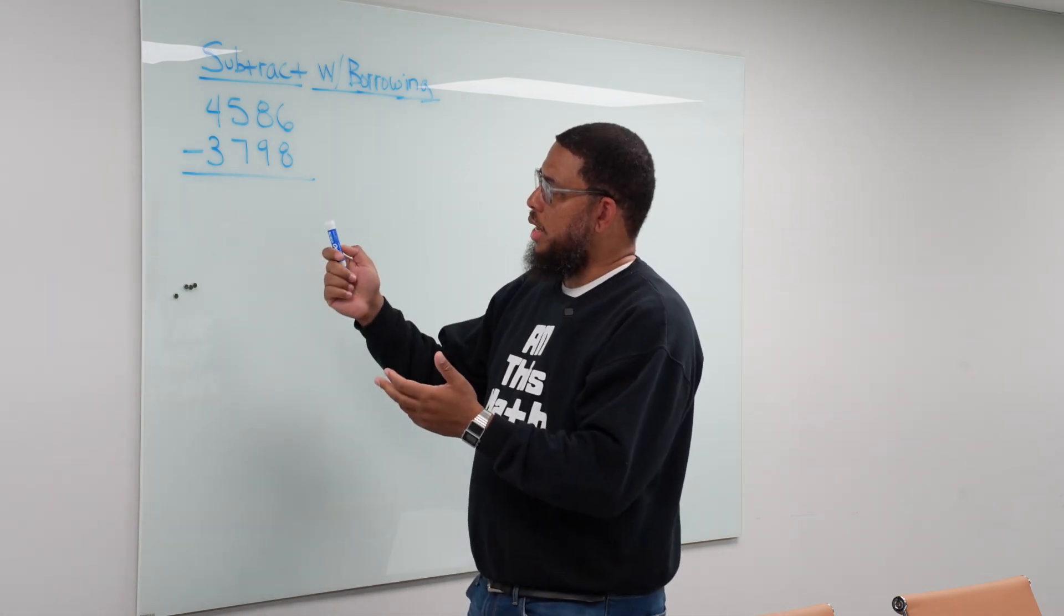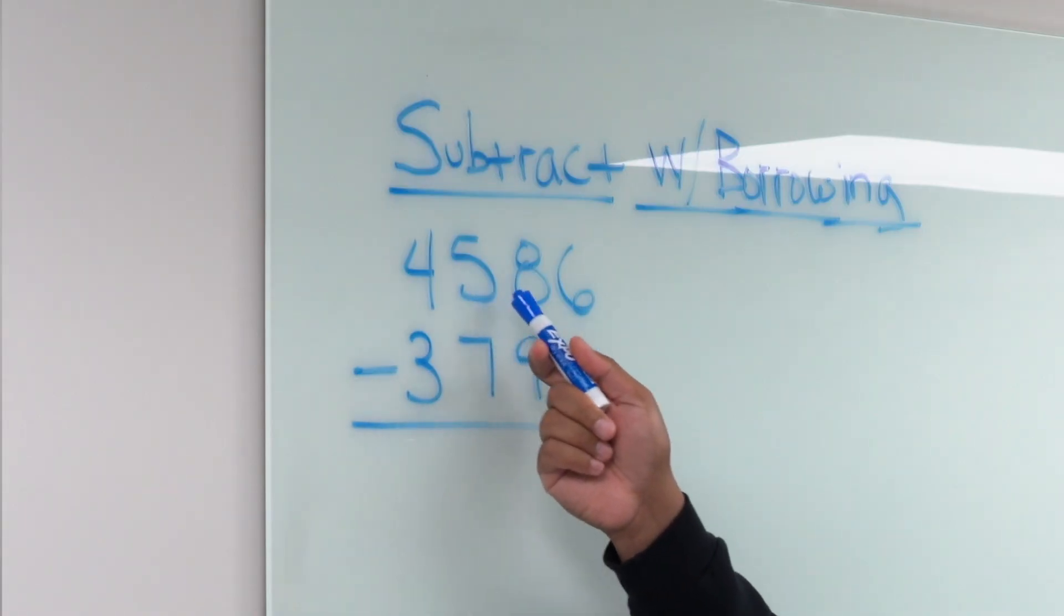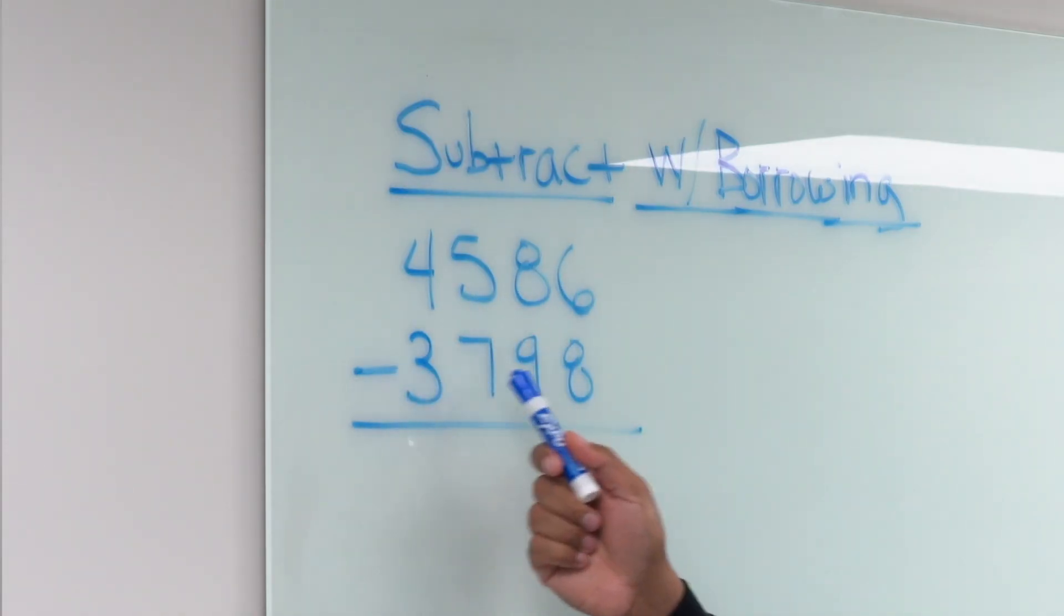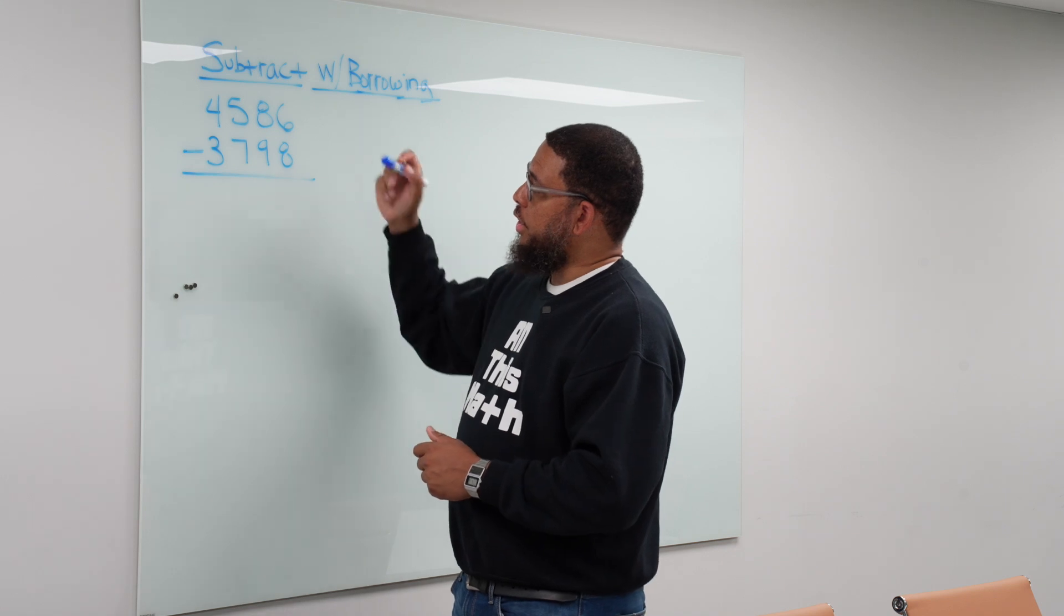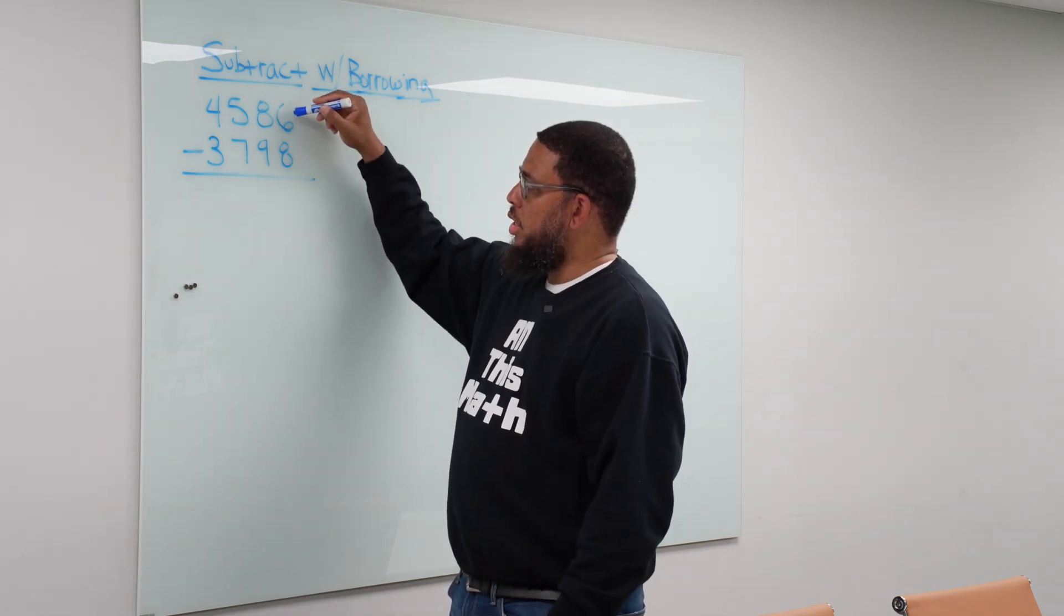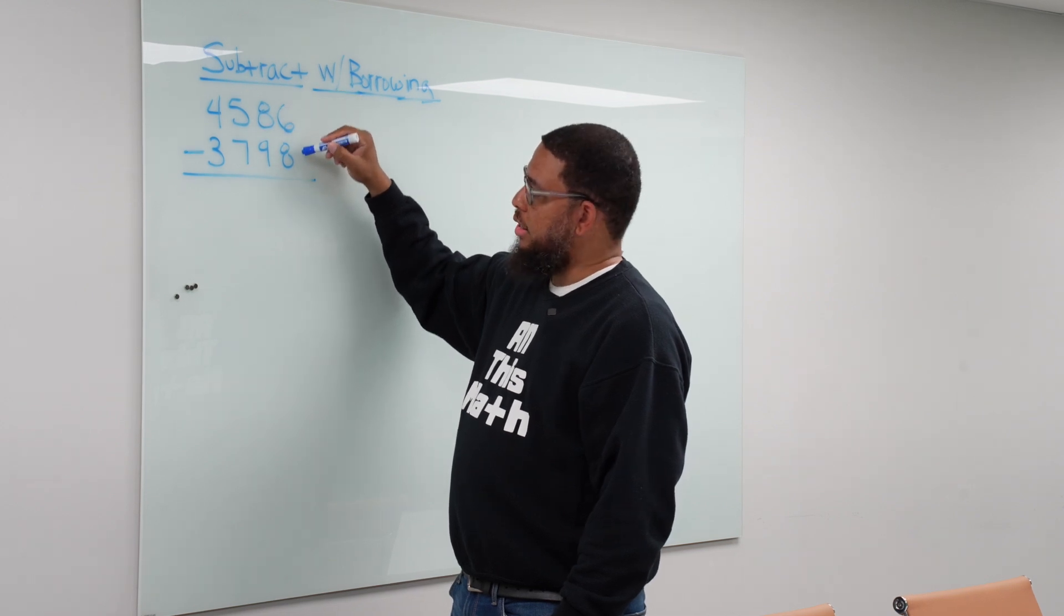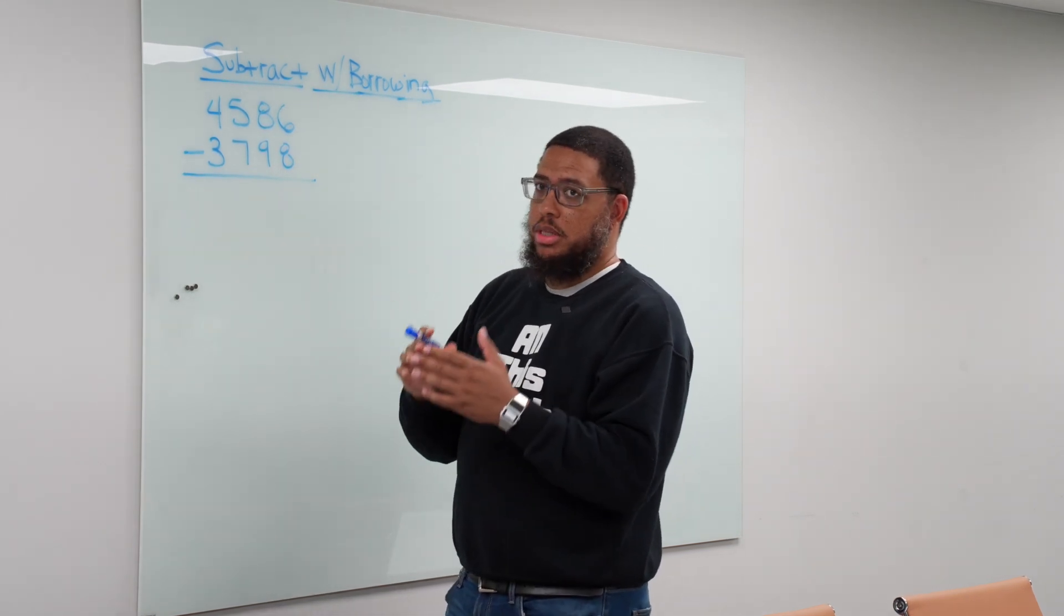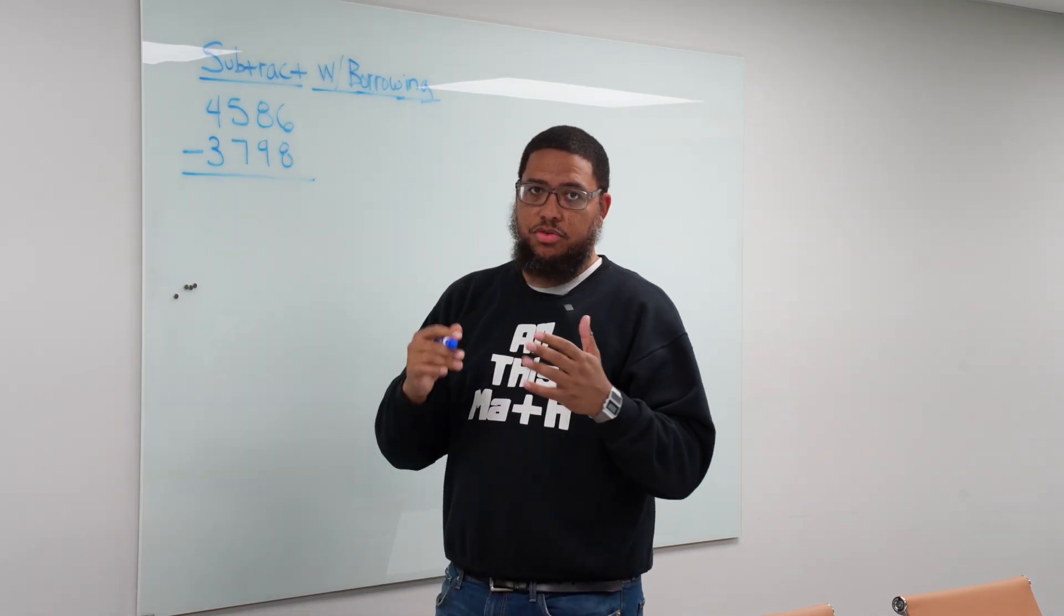So if we look at this problem we see 4,586 minus 3,798. Now the thing that you notice is that with each of these digits how they're lined up vertically, the top numbers are less than the bottom numbers. So when we want to subtract using this method, because there are a lot of different methods for subtracting numbers...